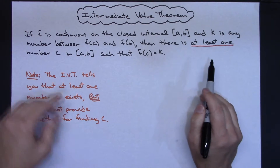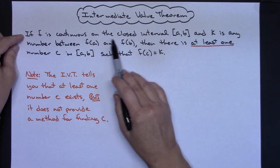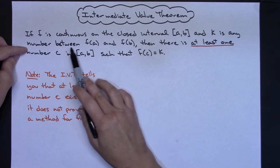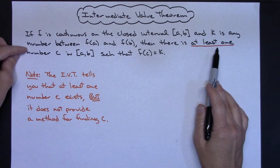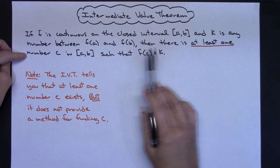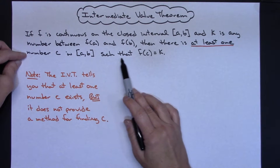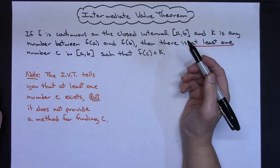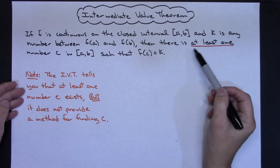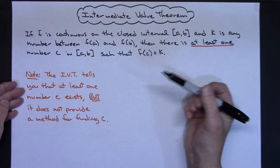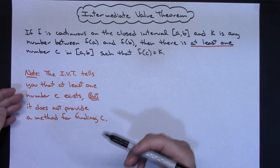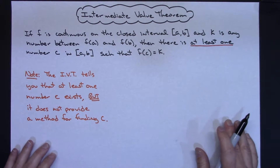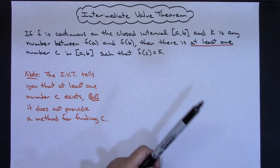The Intermediate Value Theorem states that if a function is continuous on the closed interval from A to B, and K is any number in between F of A and F of B, then there is at least one number C in that closed interval from A to B such that F of C equals K. The theorem tells you that at least one C exists — there could be more than one — but it does not provide you with a method for finding C, so you've got to come up with your own approach.